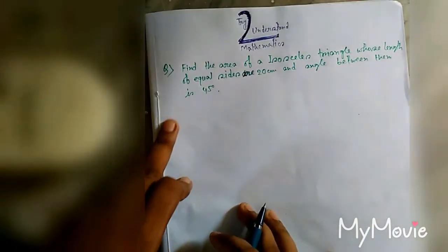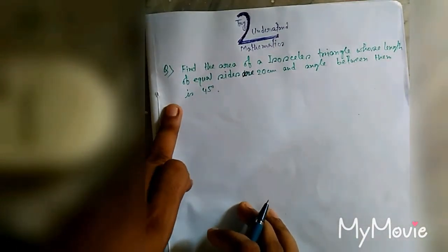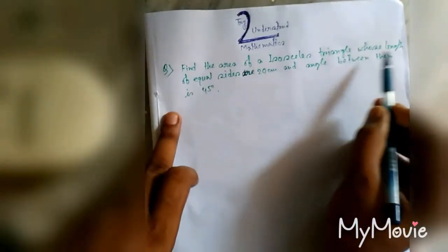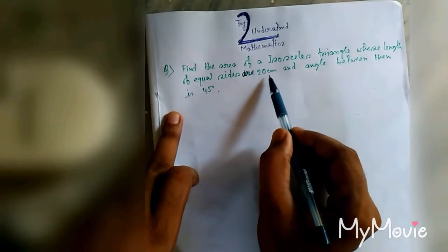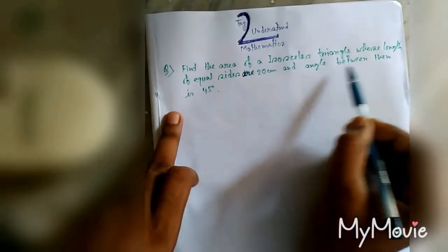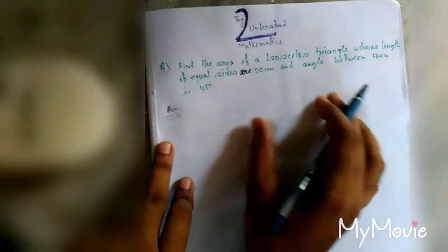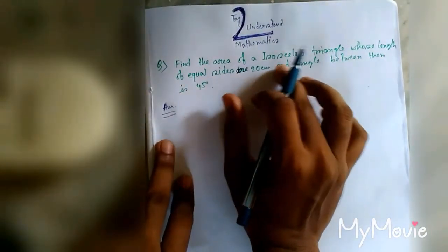This is my channel, try to understand. Let us take a problem: find the area of an isosceles triangle whose length of equal sides are 20 centimeters and angle between them is 45 degrees.